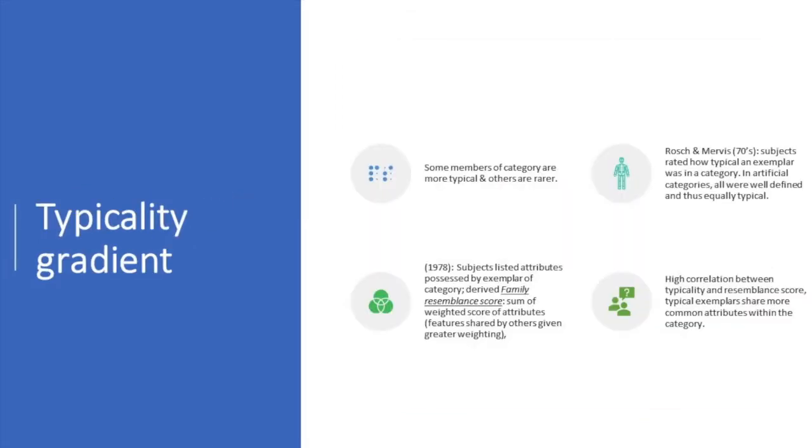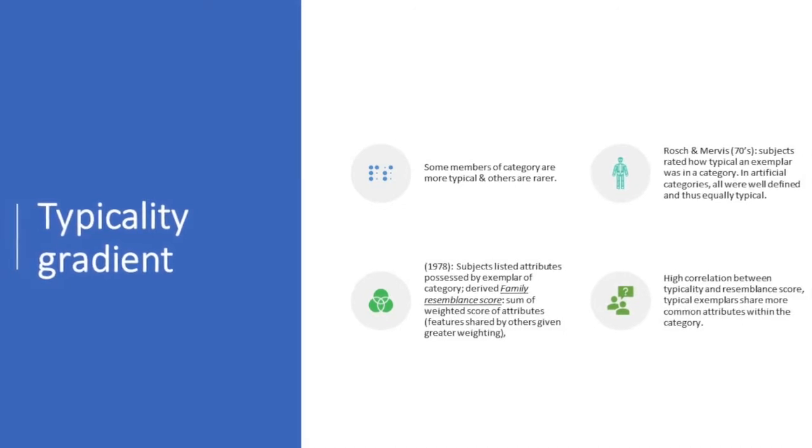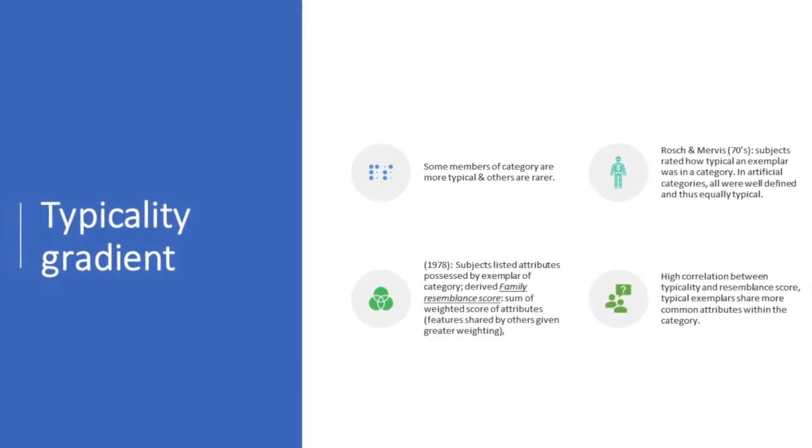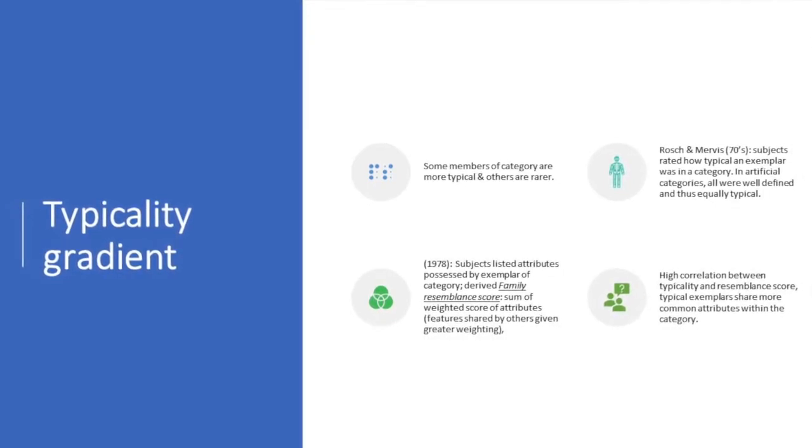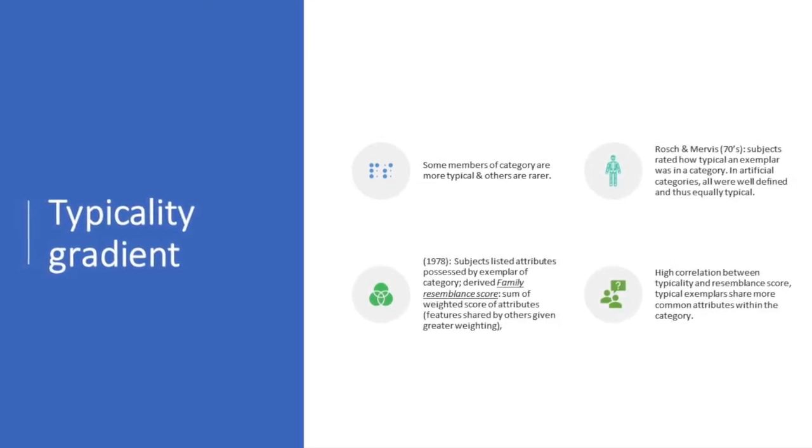Typicality gradients. Some members of categories are more typical and others are rarer. Rosch and Mervis in the 1970s got subjects to rate how typical an exemplar was in a category. In artificial categories, all were well defined and thus equally typical.